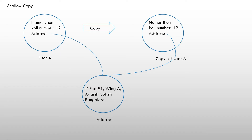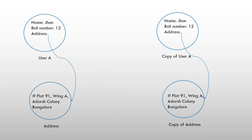To overcome this problem, we have to go with the deep copy concept. In deep copy, along with the name and roll number, we also create a copy of the address object, resulting in two different address objects in heap memory. Any change in one address will not get reflected in the other, so the two copies can work independently in your program without interfering with each other.